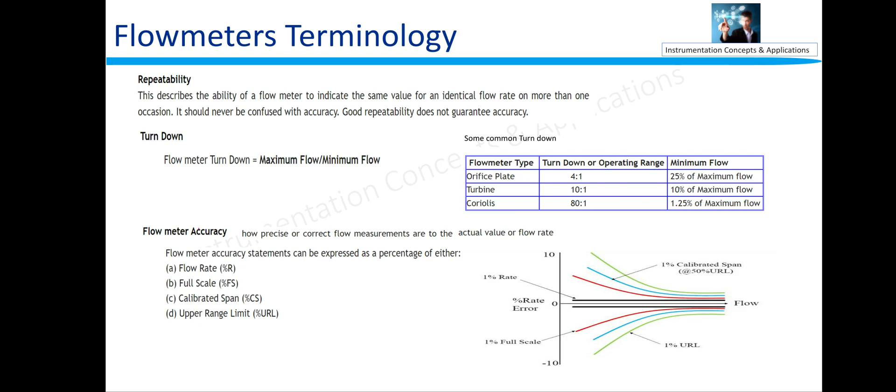Turn down ratio is maximum divided by minimum flow what transmitter can read with good accuracy. Flow meter accuracy: how precise or correct flow measurements are to the actual value or actual flow rate.